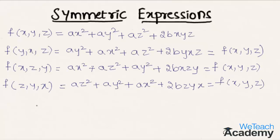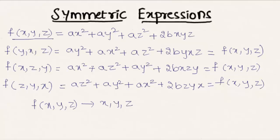So here f of x, y, z is symmetric in all three variables x, y, and z. So we call the expression f of x, y, z a symmetric expression. This was a basic introduction on symmetric expressions. Hope you understood the concept. Do like and subscribe to vteachacademy.com. Thanks for watching. Have a nice day.